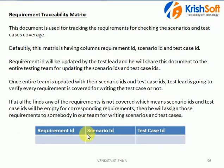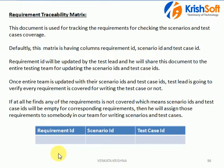You can see here this table format: Requirement ID, Scenario ID, and Test Case ID will be there. All the requirement IDs are updated here. As I have already shown you in a real-time requirement document, each and every requirement will have a unique ID. All the unique IDs will be listed here, and for each unique ID there is a corresponding Scenario ID, and for each Scenario ID there will be corresponding Test Case IDs.